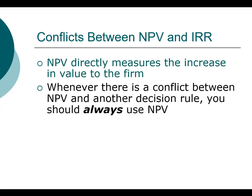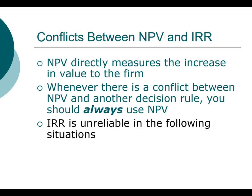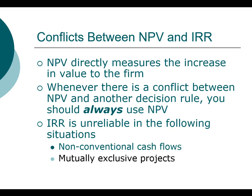Whenever there is a conflict between the net present value and any other decision rule, you should always base your decision on the net present value method. The internal rate of return is by far the most popular alternative, but it has a few shortcomings. Keep in mind that if you're dealing with non-conventional cash flows — meaning cash flows change signs more than once — or mutually exclusive projects, you want to pay particularly close attention. Let's take a look at an example to illustrate this point.